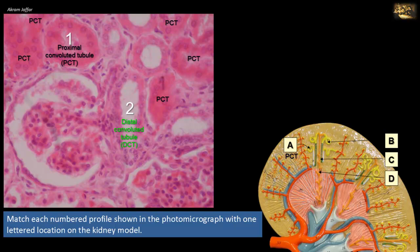The distal convoluted tubule has less affinity for cytoplasmic stains due to a smaller content of organelles compared with the proximal convoluted tubule. Finally, sections of distal convoluted tubule are much less frequent than those of the proximal convoluted tubule, because the distal convoluted tubule is a much shorter segment. Distal convoluted tubule, profile number two, thus matches with B in the plastic model.